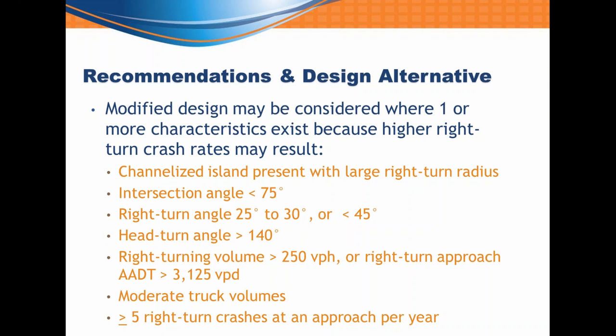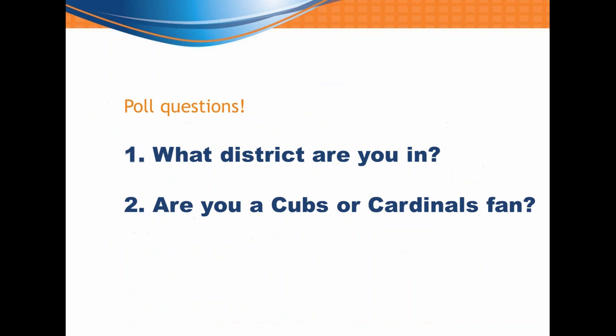We came up with some recommendations: if you have an approach with one or more of the characteristics listed — such as right-turn angle less than 45 degrees, head-turn angle greater than 140 degrees, or intersection angle less than 75 degrees — then it would be a good candidate for the modified right-turn lane design.